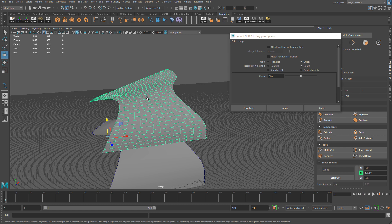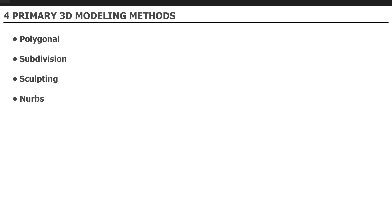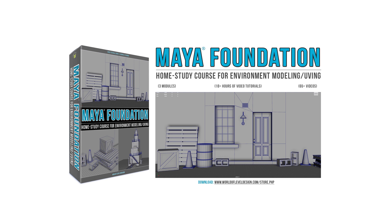So those are the four primary 3D modeling methods you should know about. Focus on polygonal modeling first and master that. Then you can explore subdivision as well as get into sculpting. Only use NURBS as a modeling technique to get more complex shapes and then convert them to polygons. For those who want to begin learning polygonal modeling from scratch using the industry standard software Maya, I have a very in-depth and extensive tutorial course — Maya Foundation: The Home Study Course — which will teach you how to get started with Maya, how to model, and how to UV.